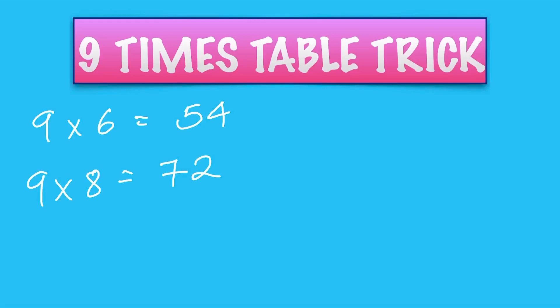One last example: 9 times 3. Take 1 away to get 2, and 2 and 7 make 9, so it's 27.